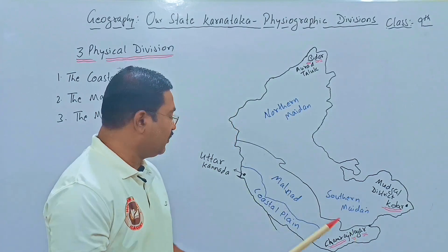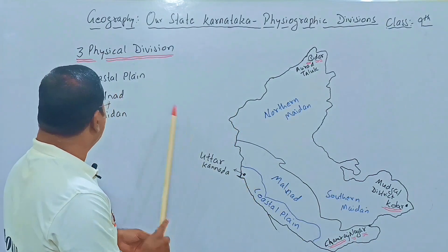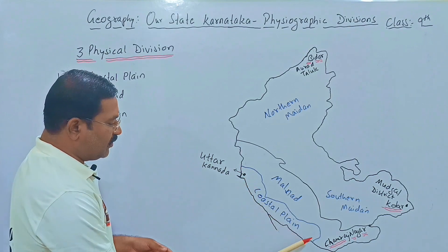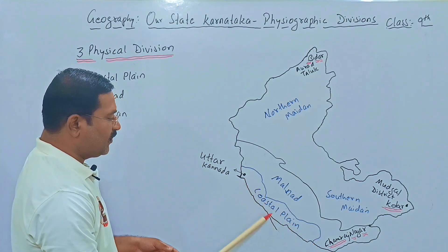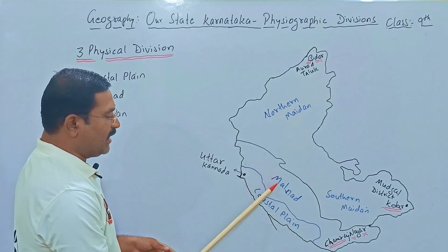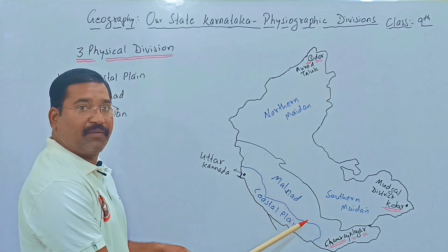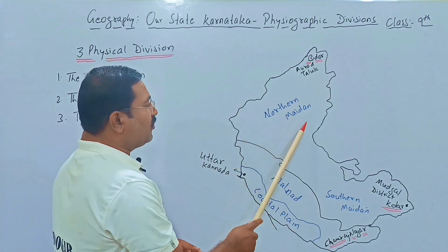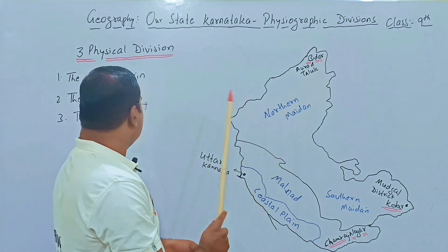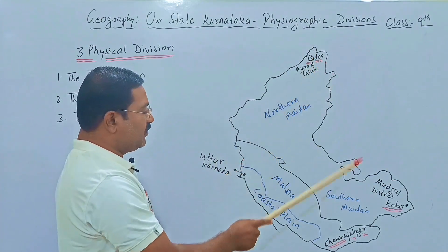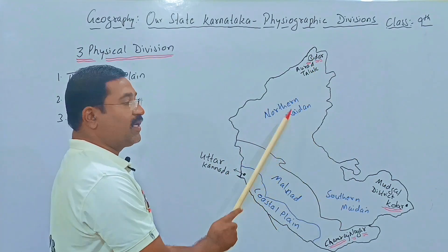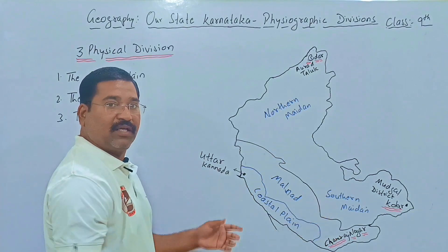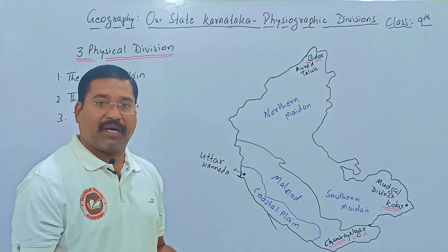Here in our map we can easily get to know the divisions. The first layer is the coastal plain, which moves from Uttara Karnataka up to near Chamrajnagar. The second layer is the Malnad area, where we see high mountains called the Western Ghats. The third layer is the Maidan, which from Bidar up to Kolar is divided into the Northern Maidan and Southern Maidan.